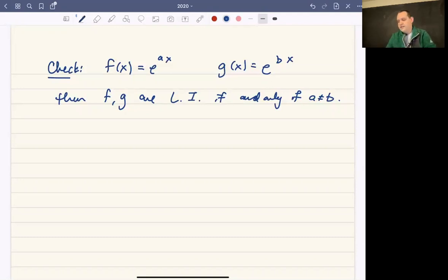So that's easy to check. One other reason to talk about this - actually two other cases that are going to be relevant for us. If you have e to the ax and g of x is x e to the ax,